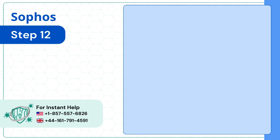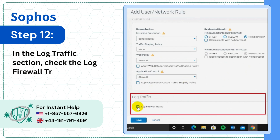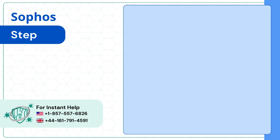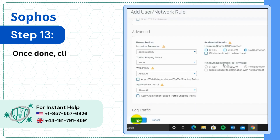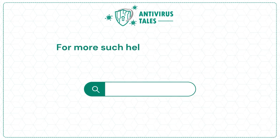Step 12: In the Log Traffic section, check the Log Firewall Traffic box. Step 13: Once done, click Save and the Firewall Rule will be added successfully.